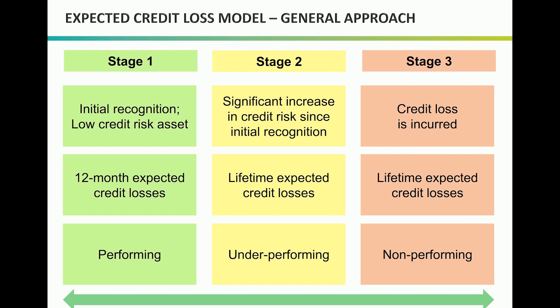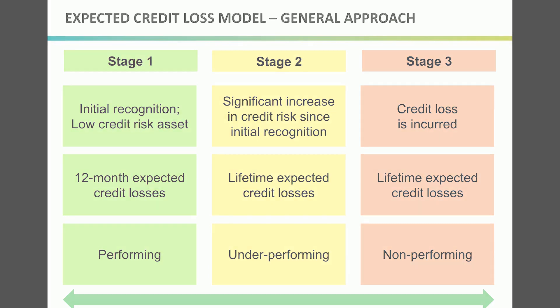Financial instruments on which lifetime expected credit losses are provided may be moved back to stage one if the events that led to significant increase in credit risk no longer exist. In this case the impairment allowance on these financial instruments will be reversed and recognized based on 12-month expected credit losses.